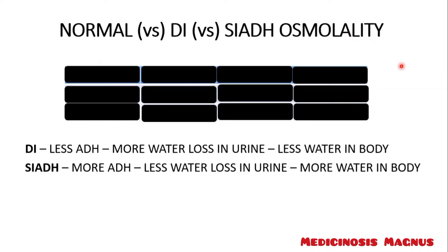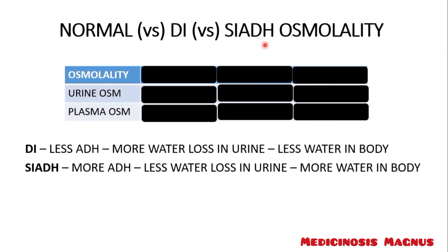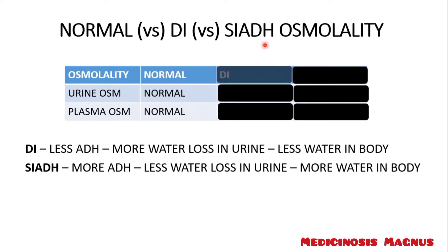Now let's use osmolality to differentiate diabetes insipidus versus SIADH. We mainly look at urine osmolality and plasma osmolality. Normally both are in a normal range, but in diabetes insipidus there is very little antidiuretic hormone, so there is more diuresis — meaning more water loss in the urine.